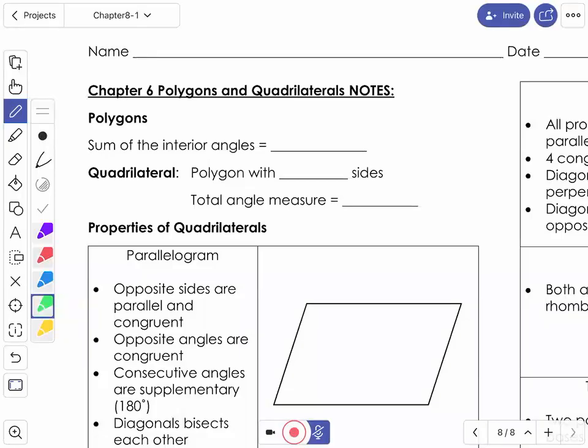Hi everyone, we're looking at our chapter 6 semester review, and chapter 6 was all about polygons and quadrilaterals.